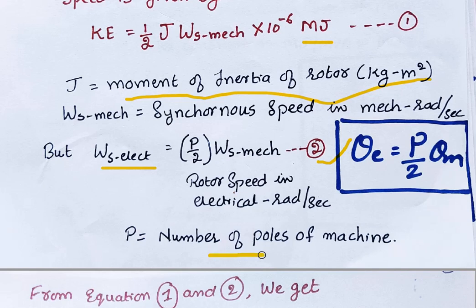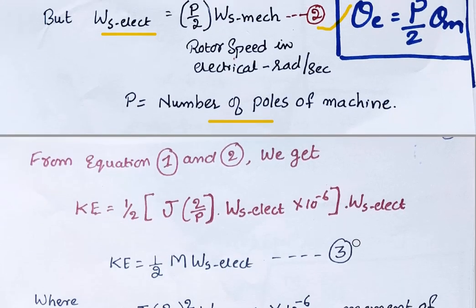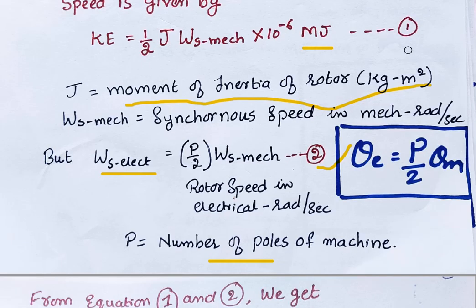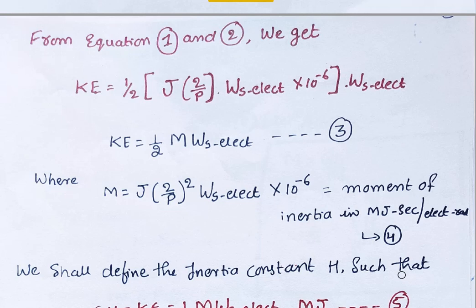Here P is the number of poles of the machine. From equation 1 and equation 2, we can substitute omega_S mechanical in terms of omega_S electrical.